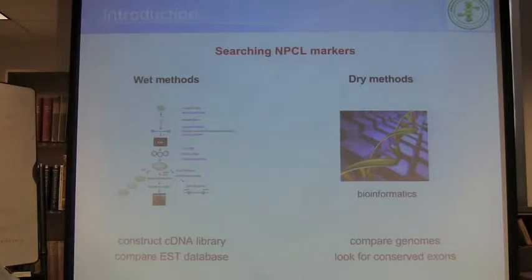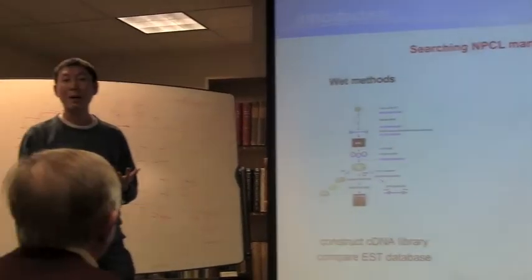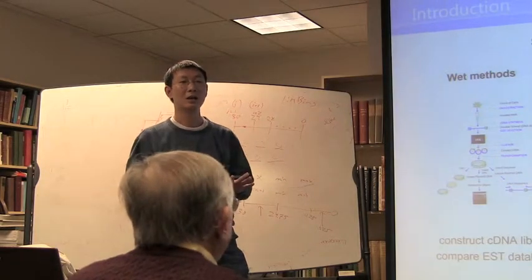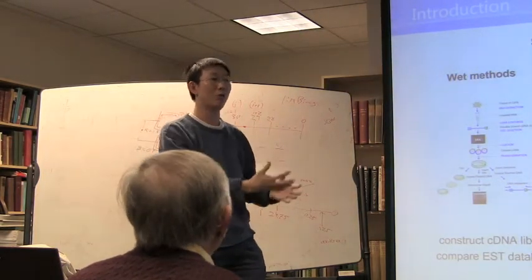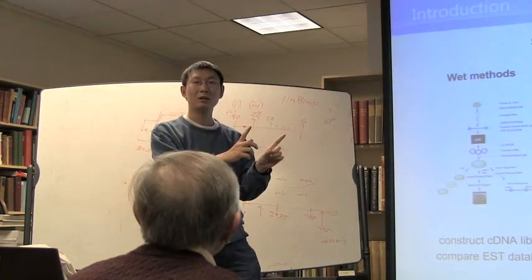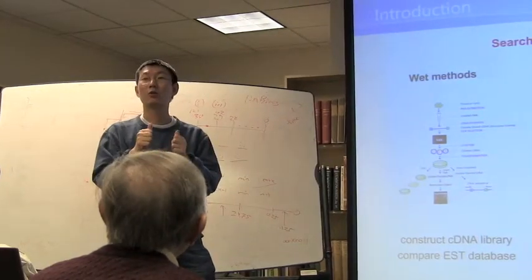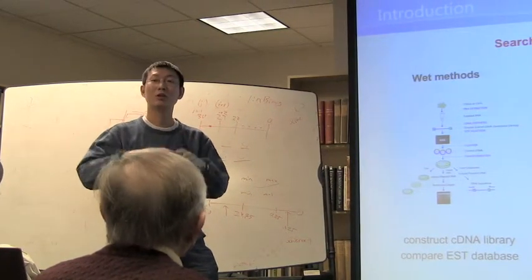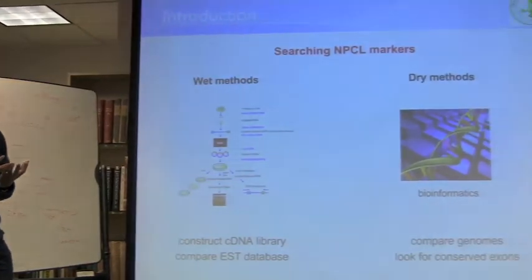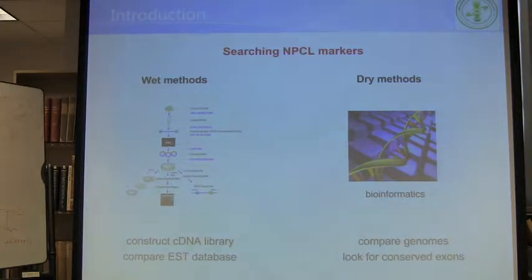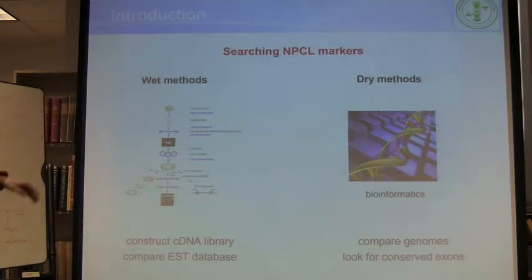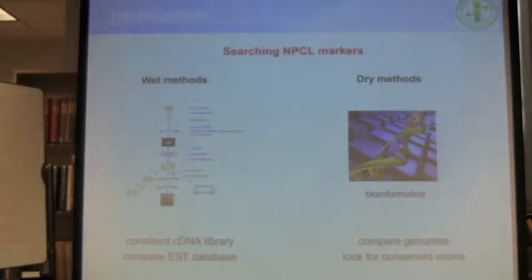The wet method — some students here are already doing similar work. They construct a cDNA library or sequence a lot of EST sequences, use the coding sequence to search for useful regions. It's quite time-consuming, but the advantage is you don't need the genome data of that animal, so it's cheaper and affordable. You can also try a money-free method — that's the dry method. You just analyze genome data in the database and gather new nuclear markers. We are going to use this approach because it's money-free. I don't have much money.